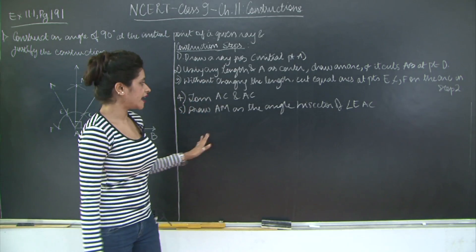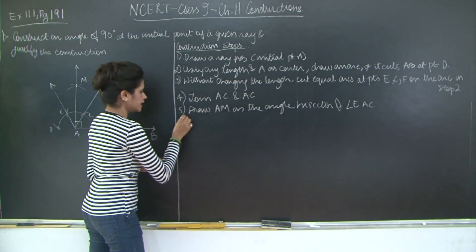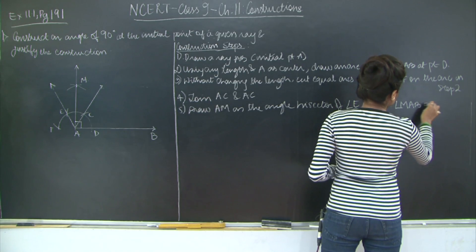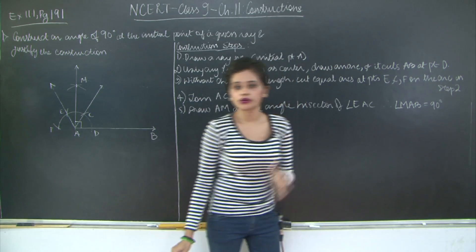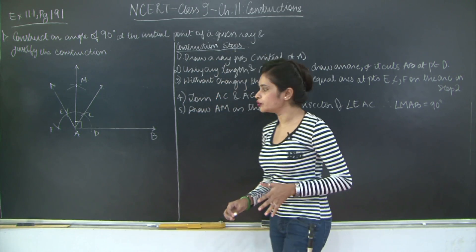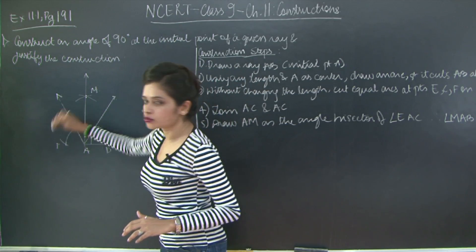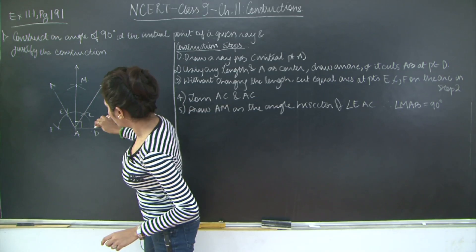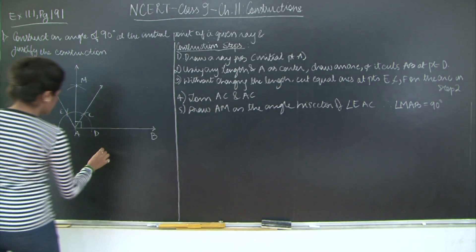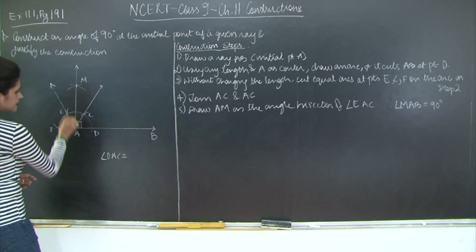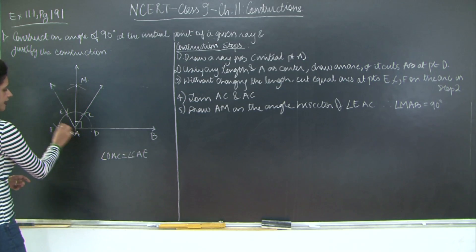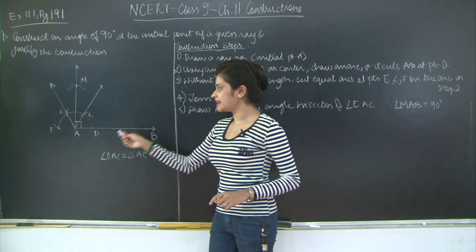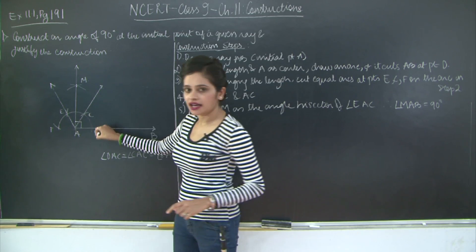Now how are we going to prove that angle MAB is equal to 90 degrees? Since we cut equal arcs, DC is equal to CE is equal to EF. Therefore, angle DAC is equal to angle CAE is equal to angle EAF, because equal arcs subtend equal angles at the centre — A is the centre and this is part of the circle. Let's mark this as equation 1.